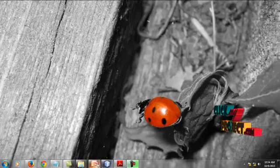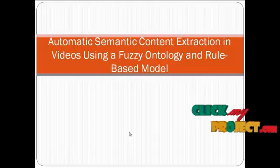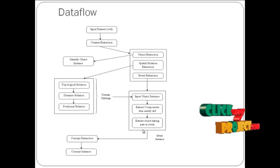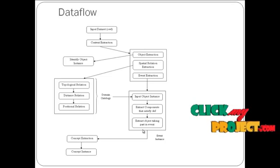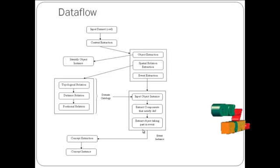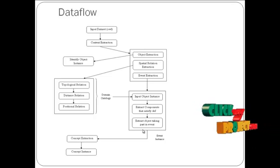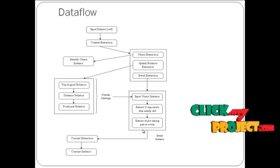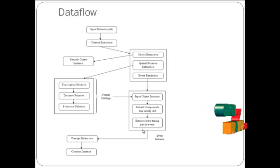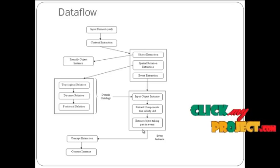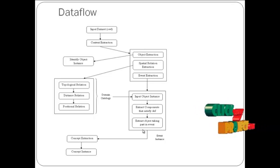Next, we are going to see the data flow of this process. First we are going to input an OWL data, and after that we are going to extract the content of the video data. We have categorized into: first we have to identify the instances on objects, which in turn performs the object extraction. Instances are nothing but the number of different objects.